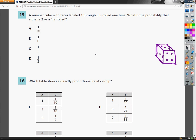This is the 7th grade TCAP practice test math section, question number 15. The question says, a number cube with faces labeled 1 through 6 is rolled one time. What is the probability that either a 2 or 4 is rolled?